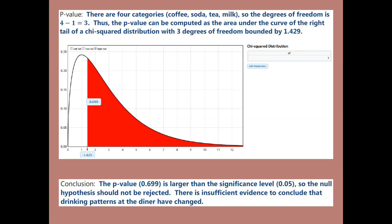The p-value of .699 is larger than the significance level, so the null hypothesis should not be rejected. If the p-value is less than alpha, you reject the null; otherwise you don't. Since the null is not rejected, there is insufficient evidence to conclude what's in the alternative — more specifically, insufficient evidence to conclude that drinking patterns at the diner have changed. If you're rejecting the null, you have sufficient evidence to conclude what's in the alternative. If you're not rejecting, you don't have sufficient evidence.